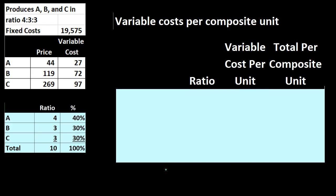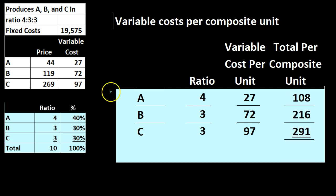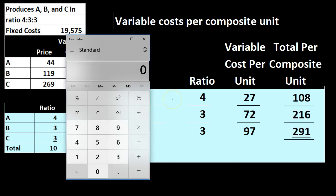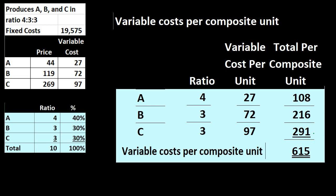Next we calculate the variable cost per composite unit using the same approach. We take the ratio 4, 3, 3 and multiply by the variable costs given in the problem — $27, $72, and $97 for A, B, and C. Multiplying out: 4 × $27 = $108, 3 × $72 = $216, and 3 × $97 = $291. Adding these gives a total variable cost per composite unit of $615.